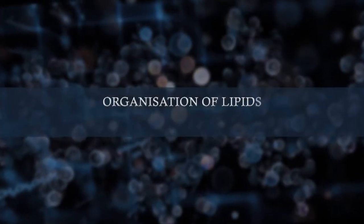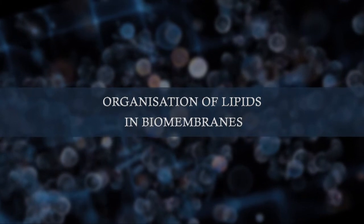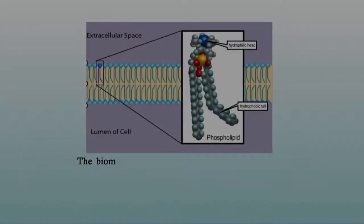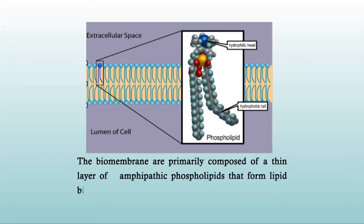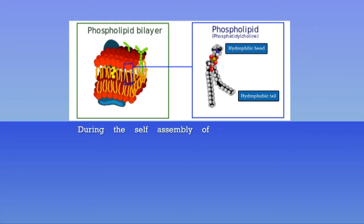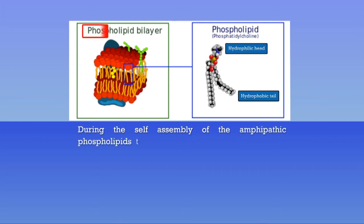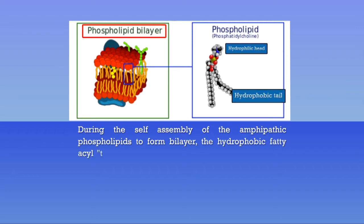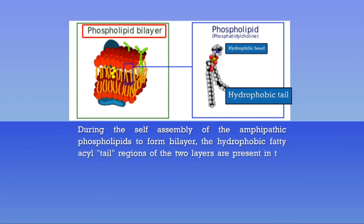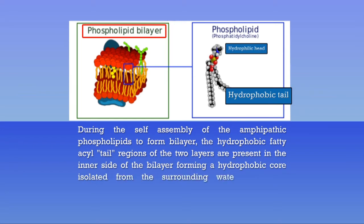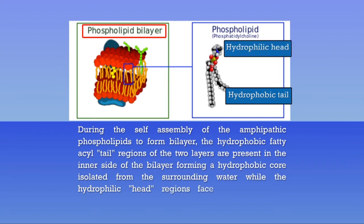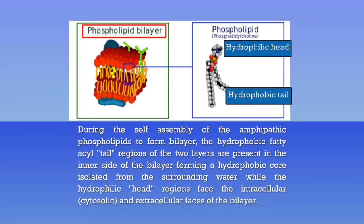Let us now see the organization of lipids in biomembranes in detail. The biomembranes are primarily composed of a thin layer of amphipathic phospholipids that form a lipid bilayer by a process of self-assembly. During the self-assembly, the hydrophobic fatty acyl tail regions of the two layers are present on the inner side of the bilayer, forming a hydrophobic core isolated from the surrounding water, while the hydrophilic head regions face the intracellular or cytosolic and extracellular faces of the bilayer.